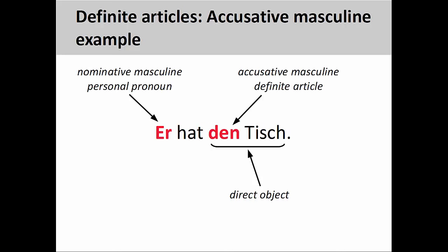This all changes, however, if we add the masculine personal pronoun Er to the sentence. This personal pronoun, since it is in the nominative case, must be the subject of the sentence. Accordingly, the masculine definite article Den indicates that the following noun is in the accusative case. The noun Tisch receives the action of being had or possessed by the subject: Er hat den Tisch — He has the table.